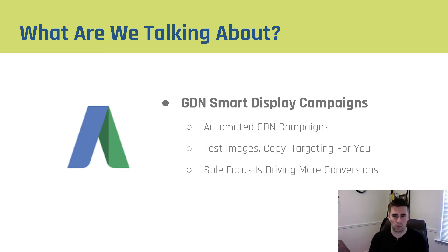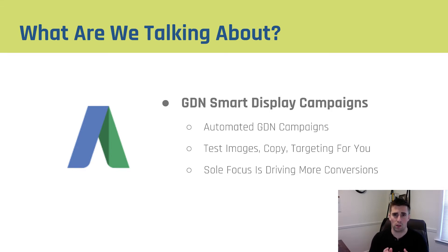So what are we talking about in this particular video? We're talking about Google Display Network smart display campaigns and they are automated GDN campaigns. They'll go through and test the images, the copy, the targeting, all for you. The sole focus is on driving more conversions. So really it's machine learning for display campaigns — something that Google has been needed to push for a long time because a lot of people don't have success on GDN.